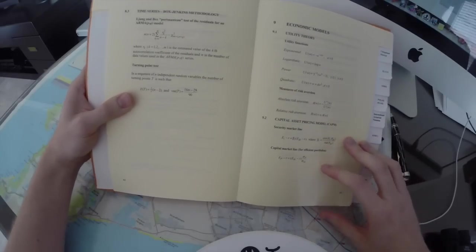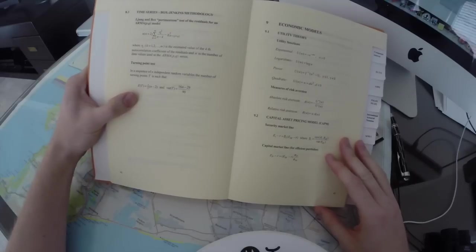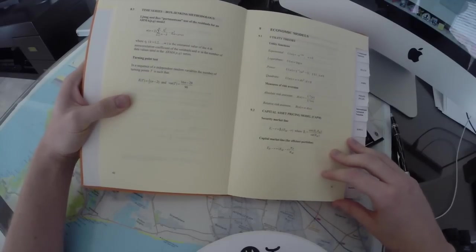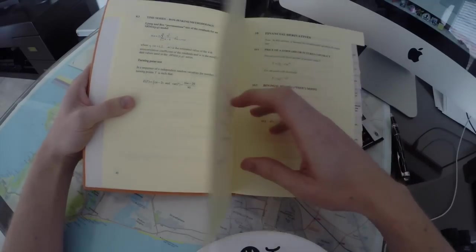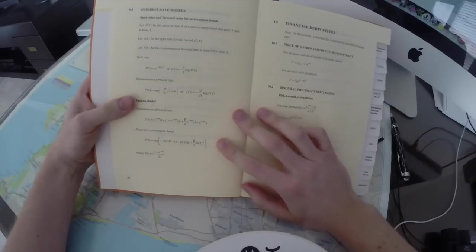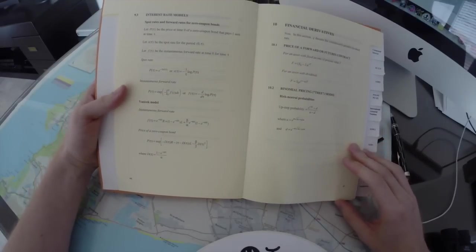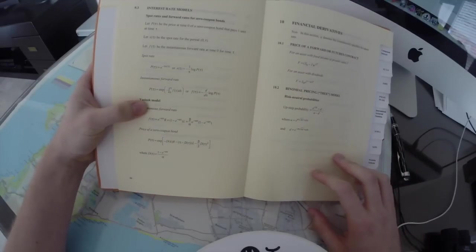And then we go on to economics, so utility theory, measure of risk aversion, capital asset pricing models, security market line, how to get the most efficient portfolio, interest rates models, spot rates and forward rates for zero coupon bonds, the CIR model, then there's the Vasicek model.